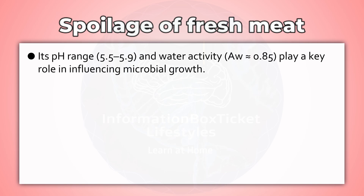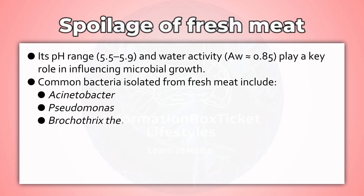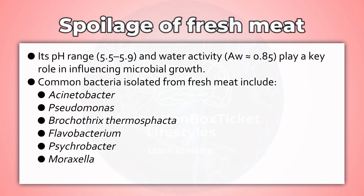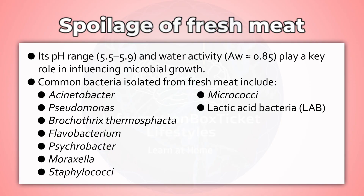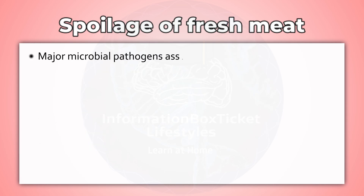Its pH range, 5.5 to 5.9, and water activity (Aw approximately 0.85), play a key role in influencing microbial growth. Common bacteria isolated from fresh meat include Acinetobacter, Pseudomonas, Brochothrix thermosphacta, Flavobacterium, Psychrobacter, Moraxella, Staphylococci, Micrococci, lactic acid bacteria, and various members of the Enterobacteriaceae family.